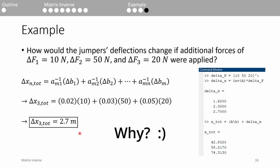If we want to compute the additional deflection of each jumper, we can simply multiply A inverse by the vector containing the additional forces. This will tell us how much extra distance each jumper will fall, so the total displacement is just the original displacement plus this vector of extra displacements.